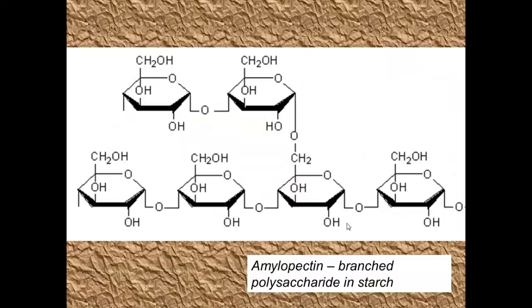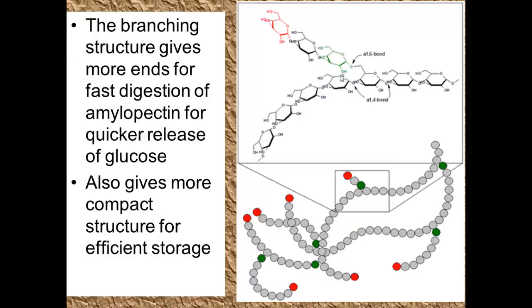Now we're going to look at amylopectin. Amylopectin is the other component of starch. It is also a polymer of alpha glucose and we have plenty of alpha 1-4 glycosidic bonds. However, amylopectin also has an alpha 1-6 glycosidic bond or linkage. This means that you can get branches coming off it. It means we get many ends for hydrolysis to occur. So we can digest it down faster if we want to release the glucose for respiration or digestion. This also gives it a more compact structure for efficient storage. Amylopectin, just as with amylose, is an insoluble molecule and will be osmotically neutral.